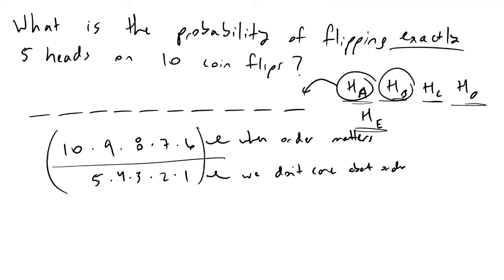This helps us normalize the total possibilities of heads in this problem. What we've done now with this quantity is determine the total number of ways that we can arrange five heads in 10 slots or 10 coin flips.